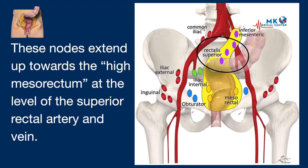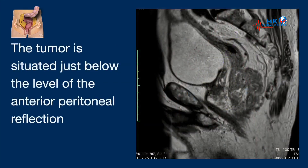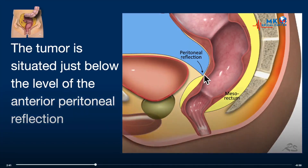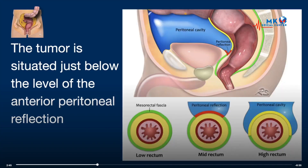Let's continue with the sagittals. The tumor is situated just below the level of the anterior peritoneal reflection, which we can see here on this illustration. This is a very important landmark, because tumors below the peritoneal reflection can only extend into the mesorectal fascia, while tumors at this level or above it can extend into the peritoneal cavity.